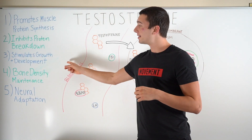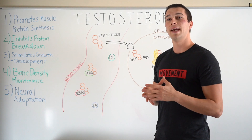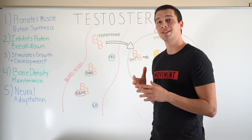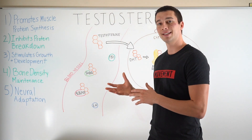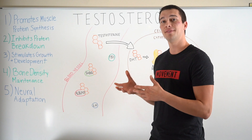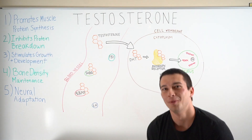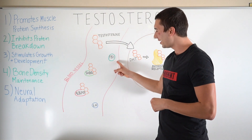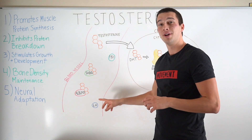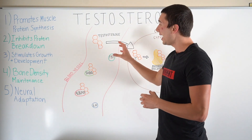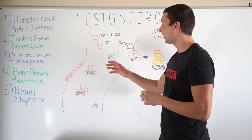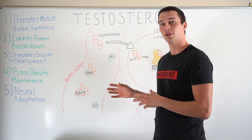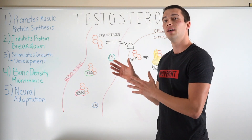Function number three is stimulation of growth and development, which is broader than just protein synthesis. This function involves stimulation of secondary sex characteristics in males and is much more significant after puberty. There are also other hormones floating around the bloodstream, like follicle-stimulating hormone or luteinizing hormone, and those can have a secondary effect on the action of testosterone — its binding and transport. Research shows that inhibiting luteinizing hormone, for example, can decrease the effectiveness of testosterone.